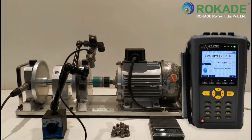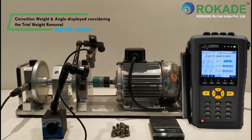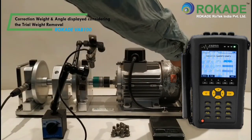Click on next. There is a pop-up of remove the trial weight. You can select yes or no. Clicking on yes, the correction weight and the angle will be displayed considering the trial weight removal.